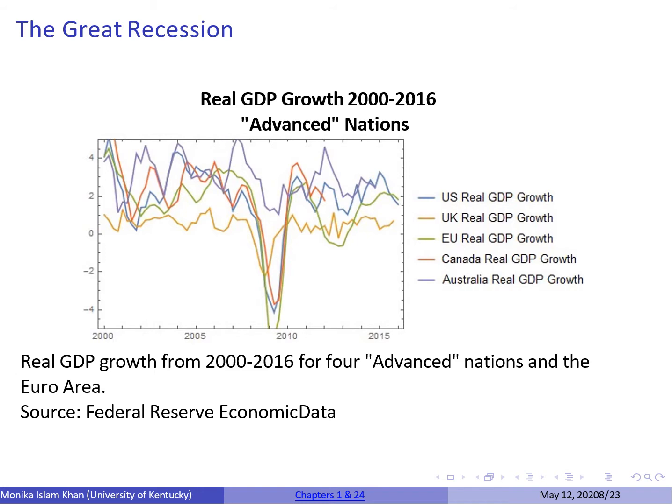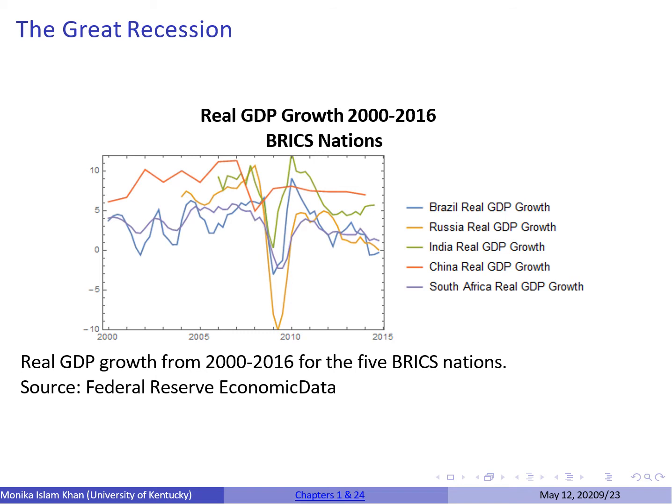This graph shows the real GDP growth rates of five advanced countries or regions between 2000 and 2016, and they all exhibit a similar pattern. From 2000 to 2007 these countries experienced sustained economic growth — short-run ups and downs are usually normal — but beginning in 2007, growth rates plunged rapidly and eventually became negative, continuing until at least 2010. This was the great recession. The second graph shows the real GDP growth rates of the BRICS nations — Brazil, Russia, India, China, and South Africa. These countries also experienced increased economic growth from 2000 to 2007, but beginning in 2007, growth rates again plunged and eventually became negative, continuing until 2010.